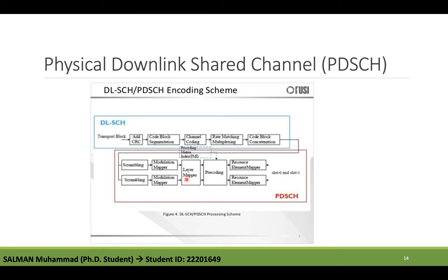The complex modulation symbols are then mapped to one or several layers via Layer Mapping, according to the transmission scheme. For a single port, a single layer is used. For transmit diversity, one codeword is allowed and the number of layers must equal the number of antenna ports used. For spatial multiplexing, one or two codewords can be transmitted and up to eight layers can be used. The number of layers must be less than or equal to the number of ports.